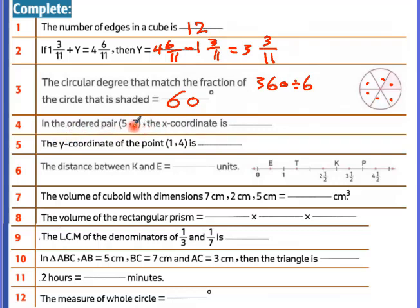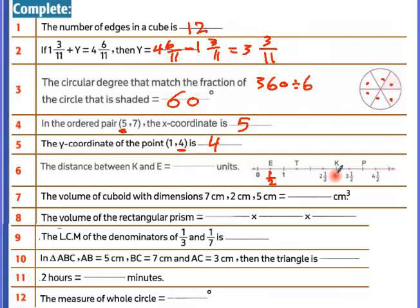In the ordered pair (5, 7), the x-coordinate is 5. For another point, the y-coordinate is 4. The distance between points k and e: e is at one-half and k is at 3, so the distance is 3 minus one-half equals 2 and a half.